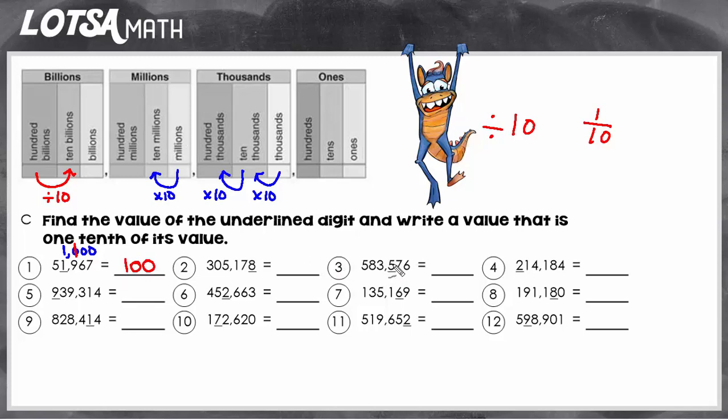So let's look at number three. For number three, the value of the five is five hundred. Right now the five's in the hundreds place. To get one-tenth of its value, we just divide by ten. Five hundred divided by ten. But to make it even easier, we can just move this digit five over one place to make it ten times smaller. So we're going to move it one place over, and instead of the hundreds place, we'll put it in the tens place. So fifty is one-tenth of five hundred.